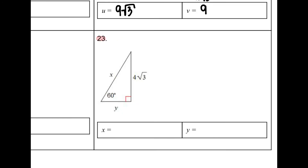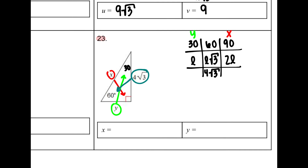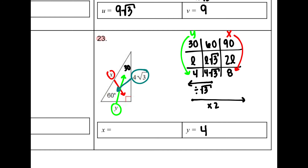Number 23: again a 30-60-90. I draw out my table: 30, 60, 90; middle row L, L root 3, 2L. X is across from the 90, so it goes on top of 90. Y is across from the 30. We're given the side across from the 60, which is 4 root 3. Going from 60 to 30 — dividing by root 3 — cancels the root 3 and leaves L equals 4. Going from 30 to 90 — multiplying by 2 — gives 8. So Y equals 4 and X equals 8.